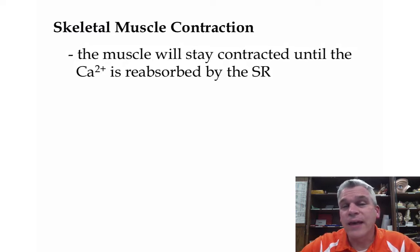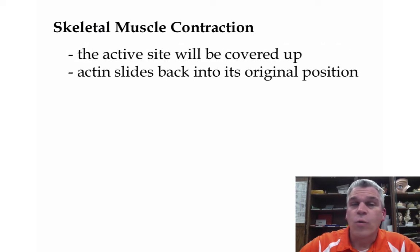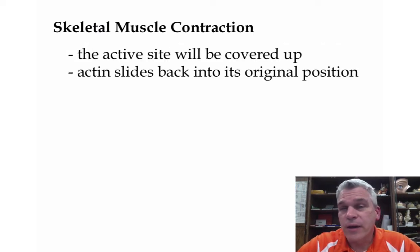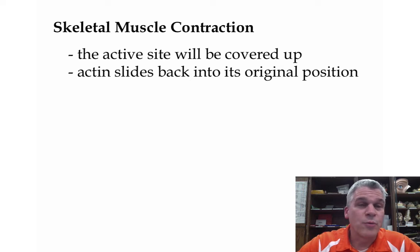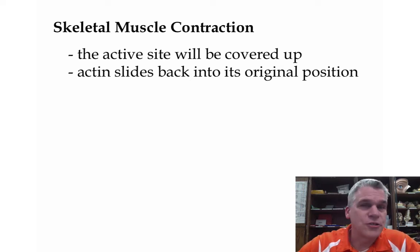The muscle will stay contracted as long as calcium is present. At some point, that calcium is going to be reabsorbed by the sarcoplasmic reticulum. When that happens, the active site will be covered up, which means those cross bridges will be broken and the actin will slide back into its original position. This is called the sliding filament theory of muscle contraction.